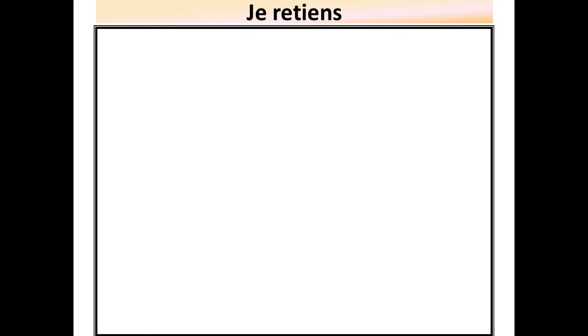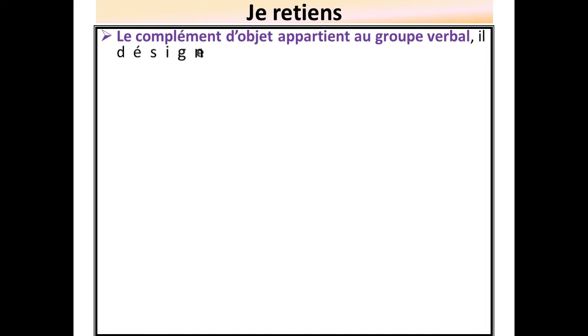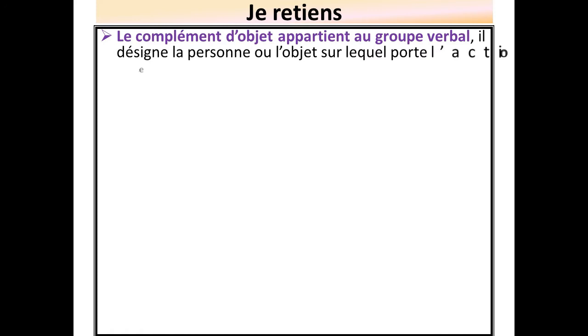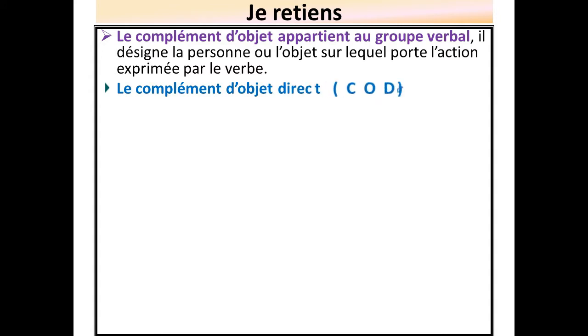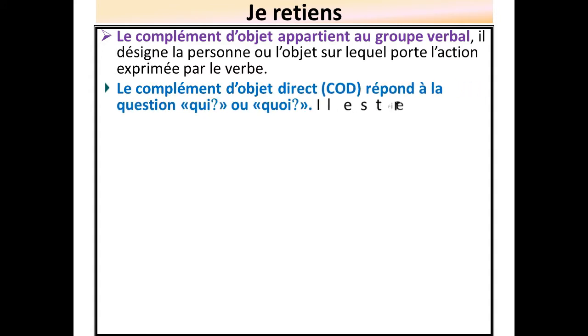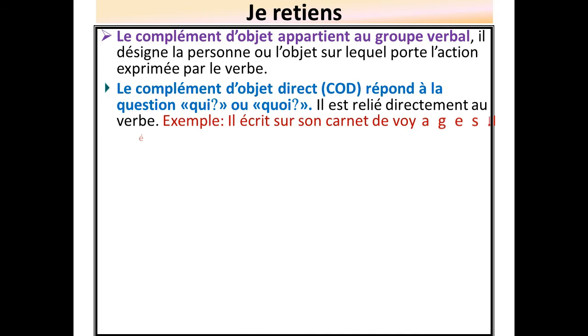Chers élèves, pour bien comprendre le tableau précédent, on reste avec la règle suivante. Le complément d'objet appartient au groupe verbal. Il désigne la personne ou l'objet sur lequel porte l'action exprimée par le verbe. Le complément d'objet direct répond à la question « qui » ou « quoi ». Il est relié directement au verbe.